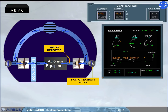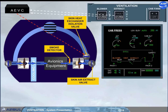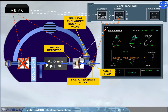In case of smoke detection, both fault lights come on. Setting both push button switches to override allows the ventilation system to be reconfigured by isolating the skin heat exchanger through the closure of the skin exchanger isolation valve, by stopping the blower fan, by opening the small flap of the skin air extract valve, by transferring the control of the extract fan to the push button switch, and by adding air from the air conditioning duct through an air conditioning inlet valve.